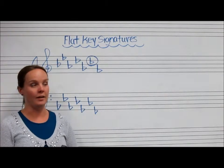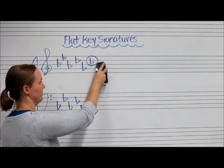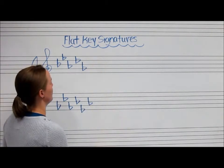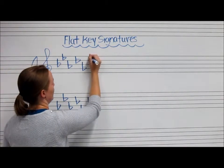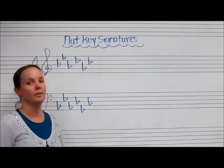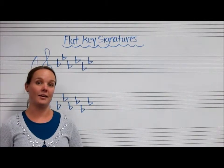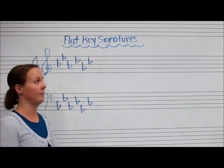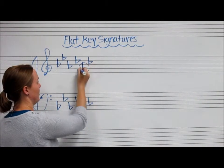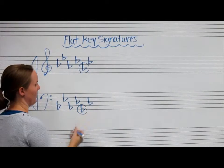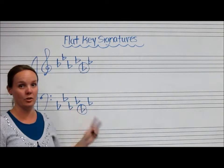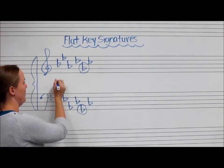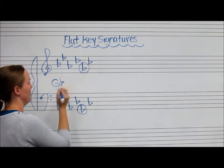If we were to take away a flat sign — let me redraw this one up here — and look for the second-to-last flat with this key signature, you're going to find that your second-to-last flat is right here, or right here in the bass clef. These two should always match between treble and bass. That's a G, so therefore we are in the key of G-flat.